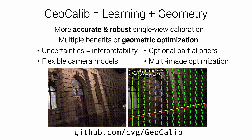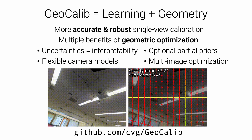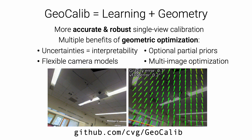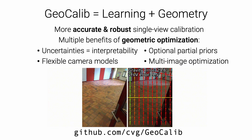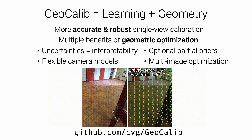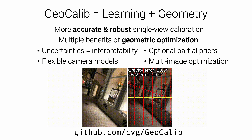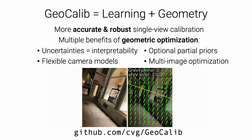To conclude this video, GeoCalib is a new approach to single image calibration. It is more robust and more accurate than existing approaches thanks to a combination of deep learning and geometric optimization. This optimization has multiple benefits that make it easier to use GeoCalib in practical applications. The code and weights are publicly available with a permissive license. Thanks for watching!